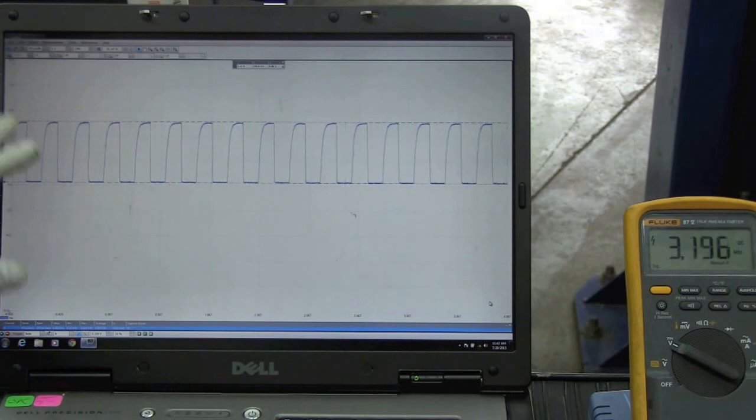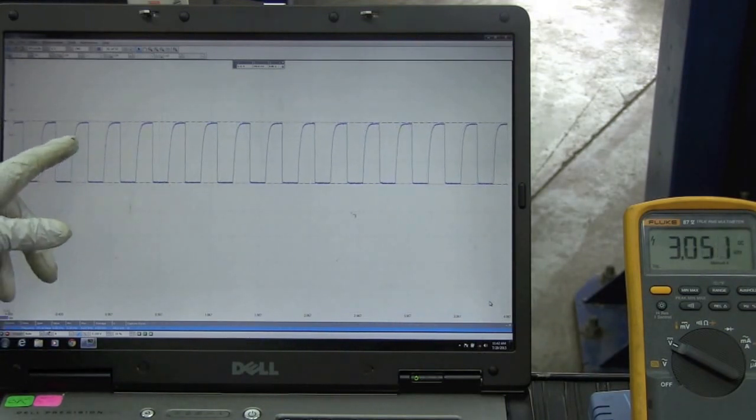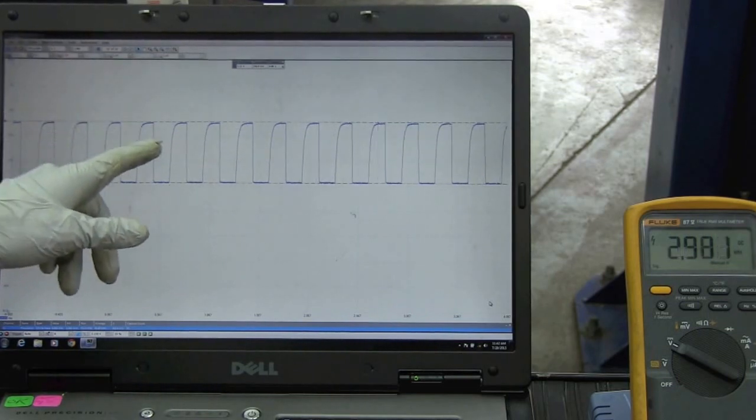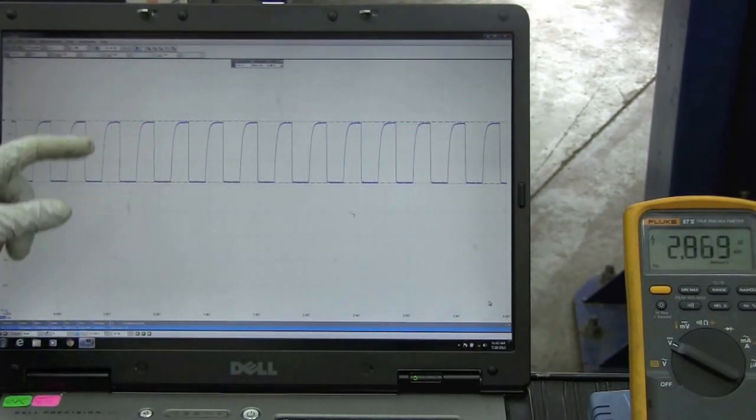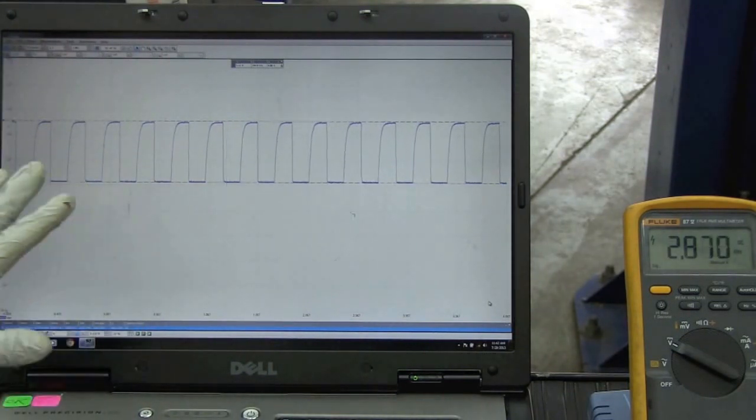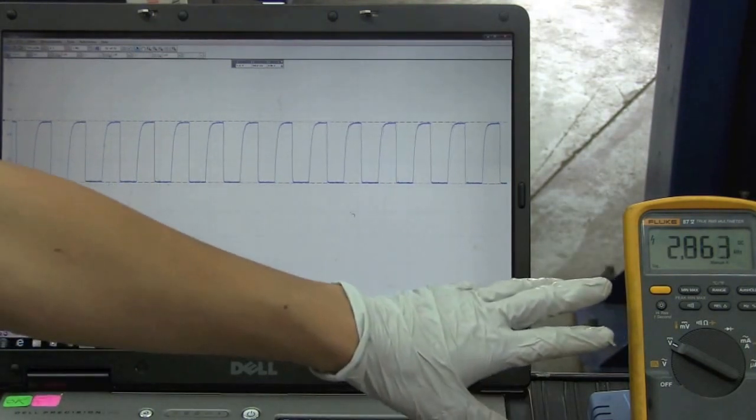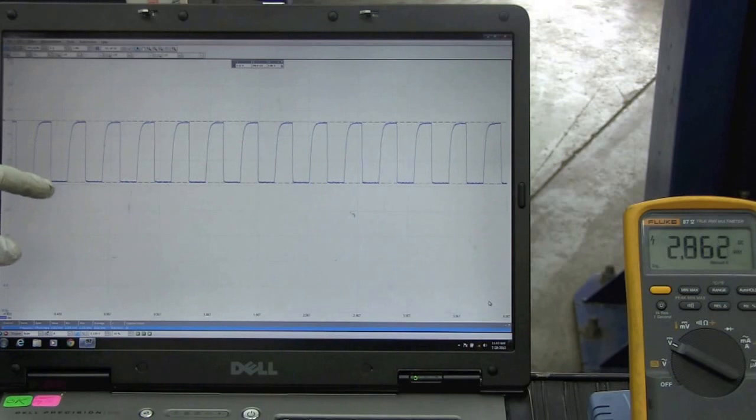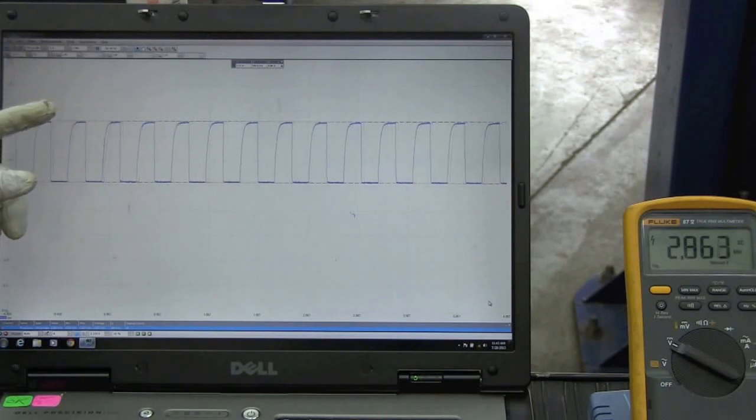You can see there that we've raised our engine idle, and we have more frequency, or more peaks and valleys as we accelerate the engine because there's more air. Something that you can see here that's different than the meter is you can actually see the peaks and valleys. You can see if they're even. You can see the slope on either side.